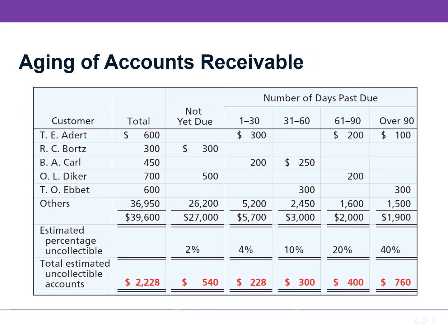The aging of accounts receivable schedule classifies customer balances by the length of time they have been unpaid. In this example, accounts receivable totals $39,600. Of this amount, $27,000 are not due yet; $5,700 are 1 to 30 days past due; $3,000 are 31 to 60 days past due; $2,000 are 61 to 90 days past due; and lastly $1,900 are over 90 days past due.